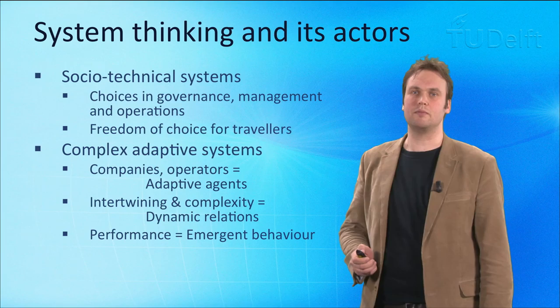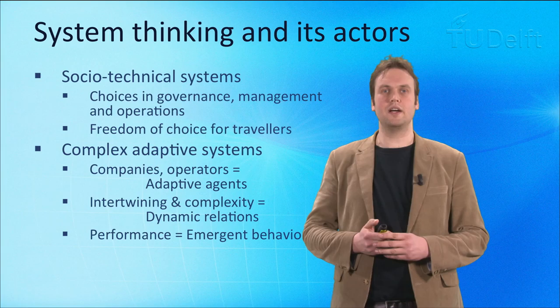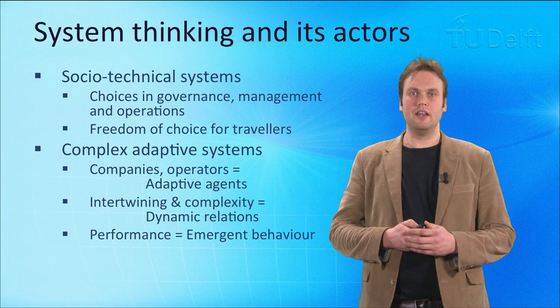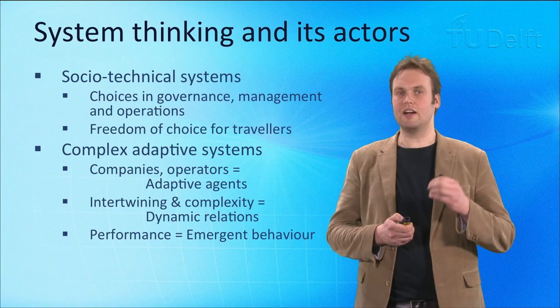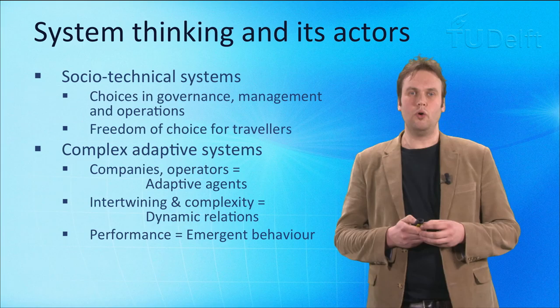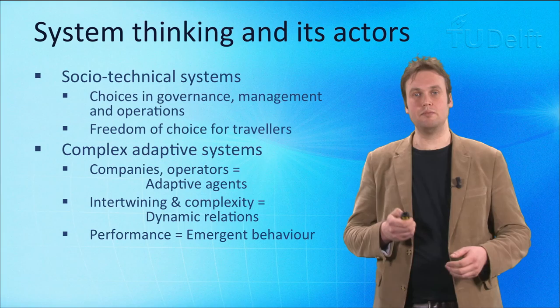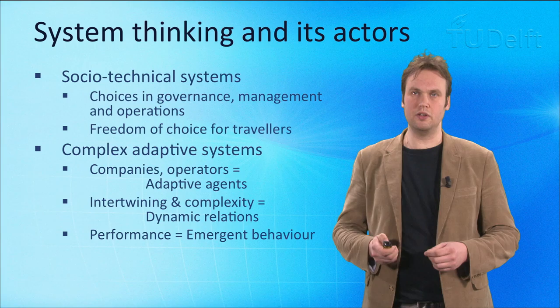The second view is that of complex adaptive systems. This comprises companies, operators, and all kinds of other stakeholders that we consider to be adaptive agents. They have all kinds of unpredictable behaviour, and also all kinds of relations and intertwining. These relations are dynamic and this influences their behaviour again. All these unpredictable components make the performance of such a complex adaptive system better seen as emergent behaviour than as the direct predictable result of something.